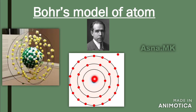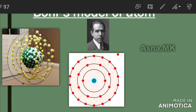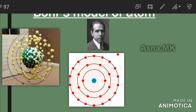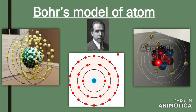K shell is the first shell closest to the nucleus. On the L shell, there are several electrons — 1, 2, 3, 4, 5, 6, 7. In the center there are protons and neutrons, and in the orbits there are electrons. This is the scientific world's accepted atomic model.